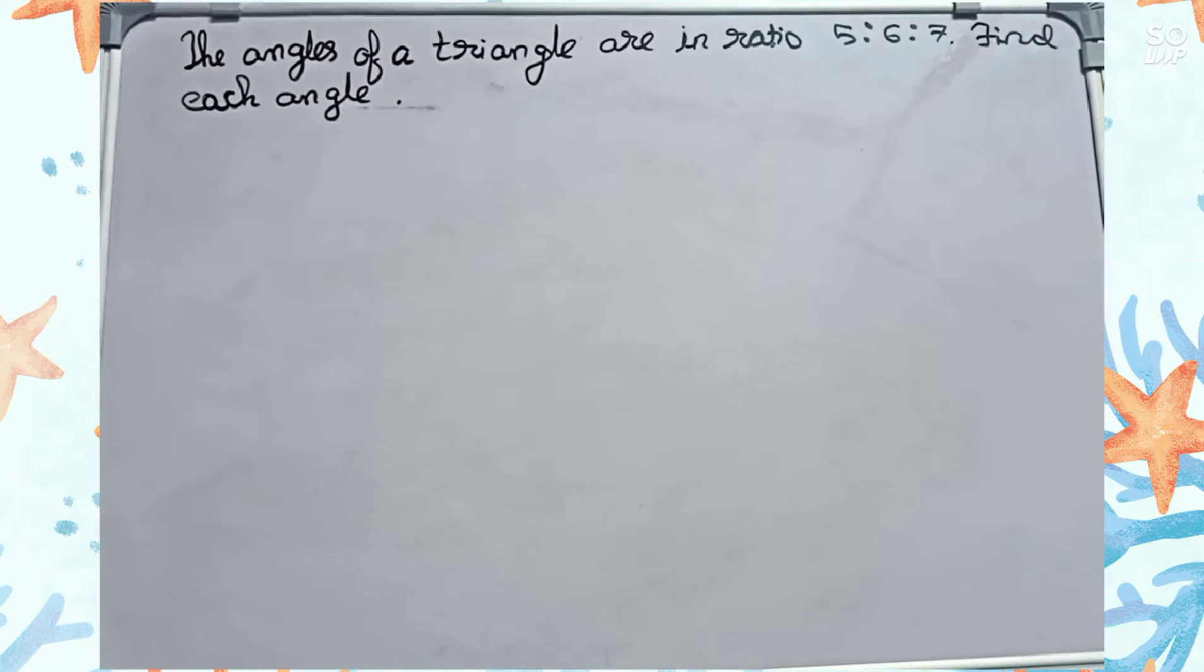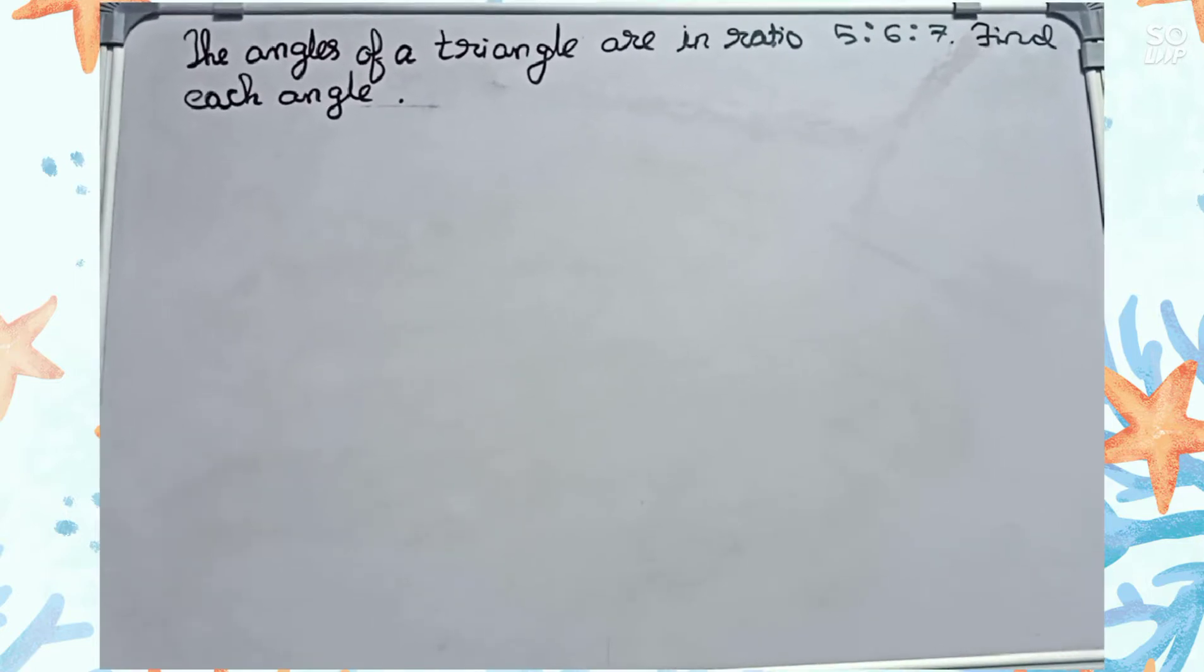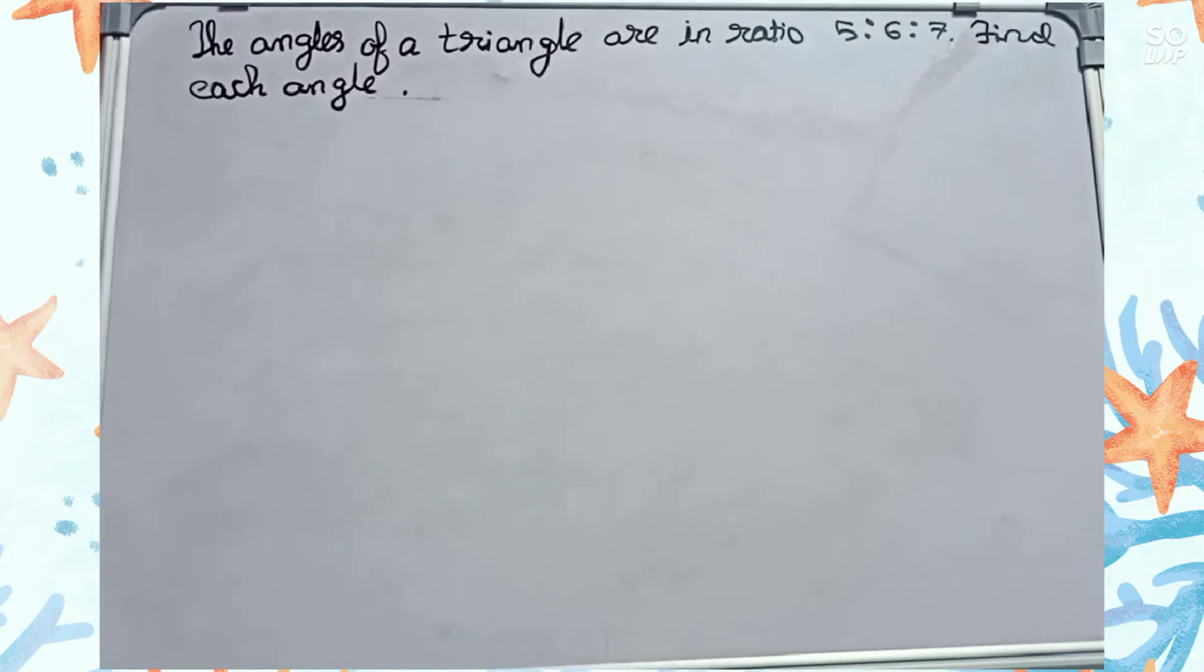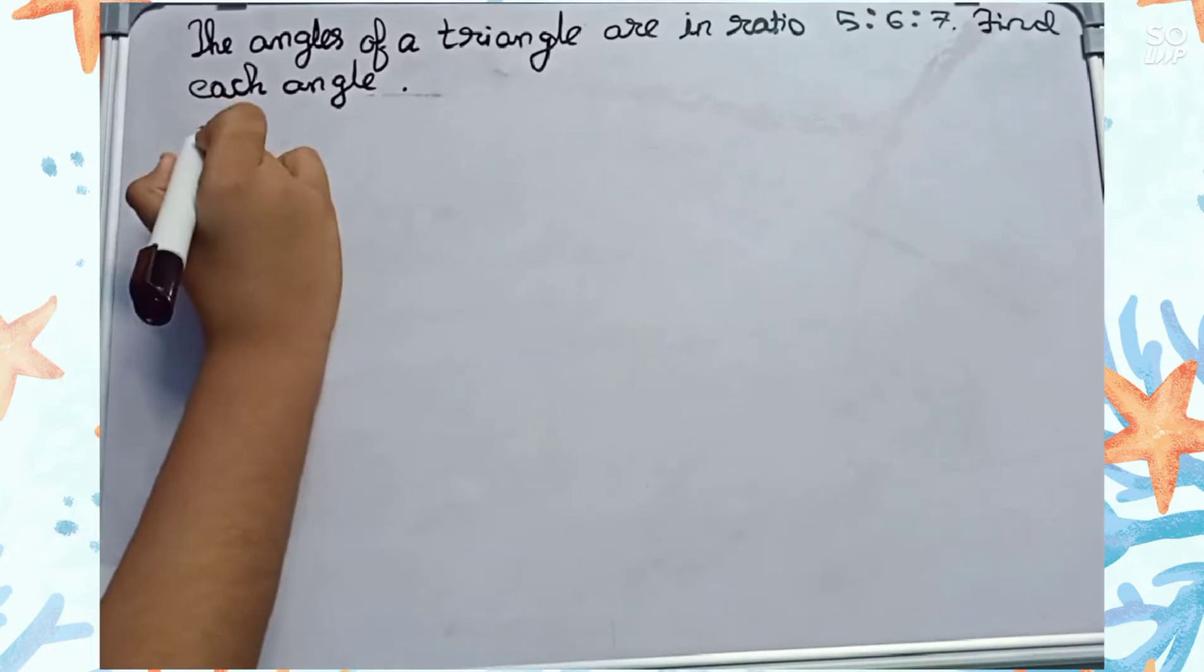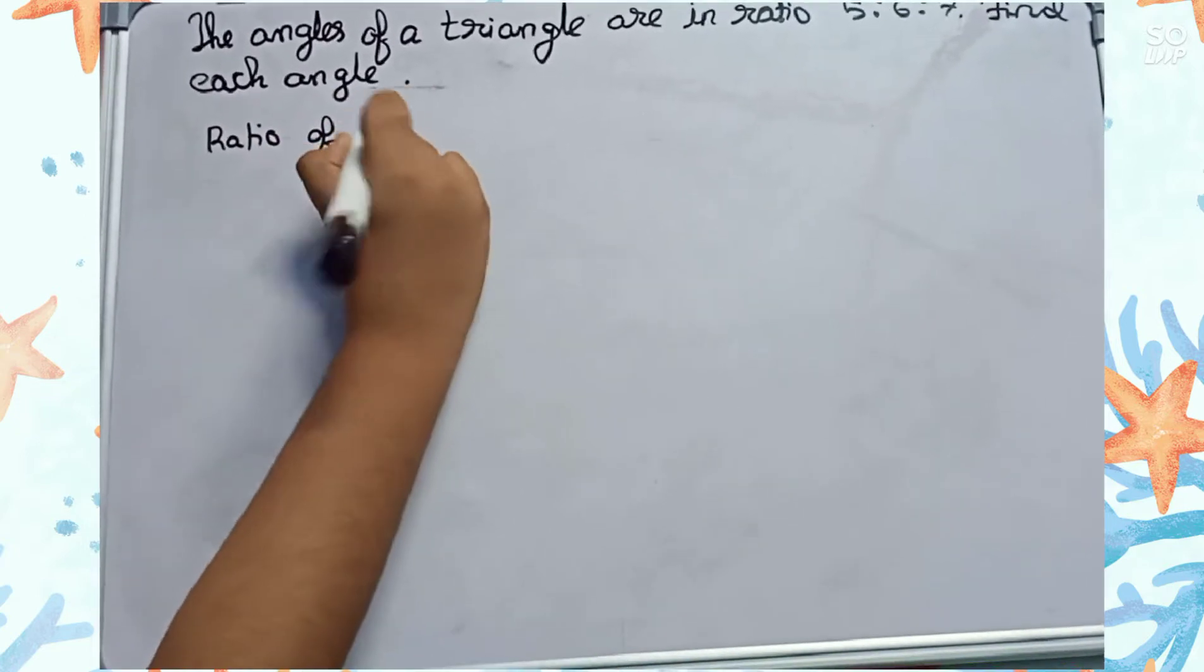Hello friends, welcome to this video. In this video our question is: the angles of a triangle are in ratio 5 is to 6 is to 7, find each angle. So let's start. The ratio of three angles equals 5 is to 6 is to 7.